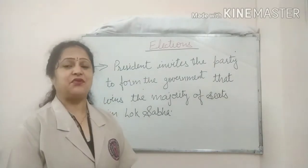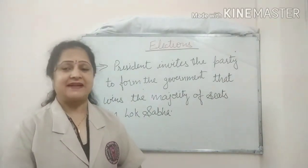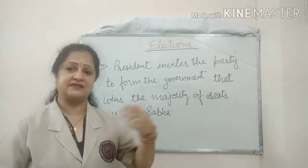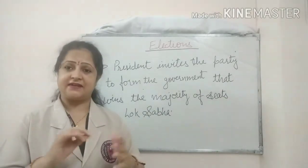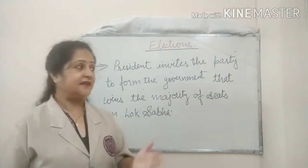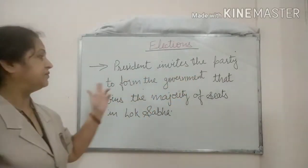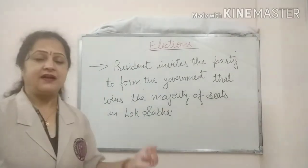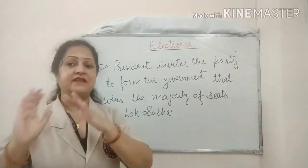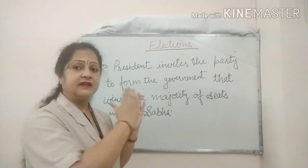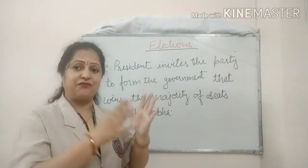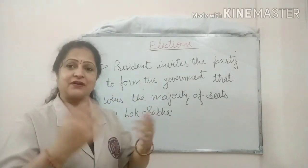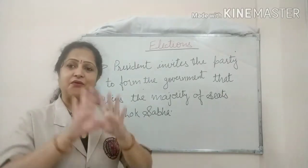After the results of all 545 seats of Lok Sabha are declared, the President invites the party that wins the majority of seats to form the government — that is, the party that wins from the maximum number of constituencies. The President then invites that party to come and form the government. This is the whole procedure of forming the government.